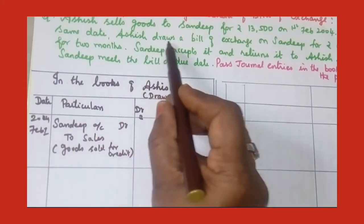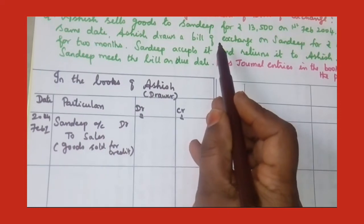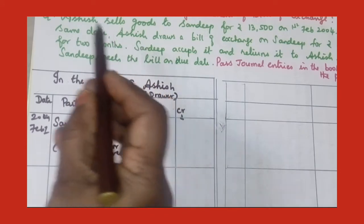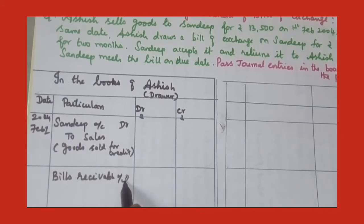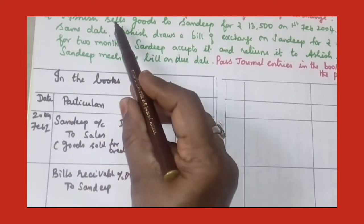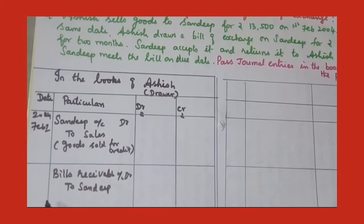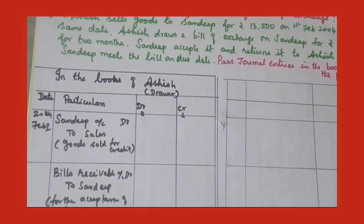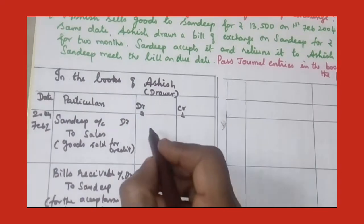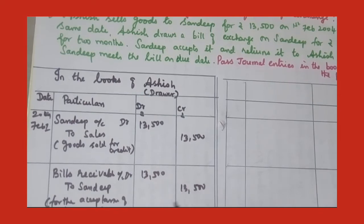The next entry — on the same date, Ashish draws a bill of exchange on Sandeep. Ashish prepares the bill and gives it to Sandeep, and Sandeep accepts it and gives back the bill to Ashish. So Ashish receives the bill — what comes in we have to debit. Bills receivable account debit, and credit Sandeep — from whom he is receiving. Always remember, in the drawer's book he will write only the bills receivable term. For the acceptance of the bill received — the amount is 13,500.